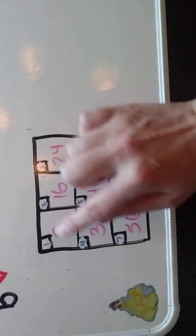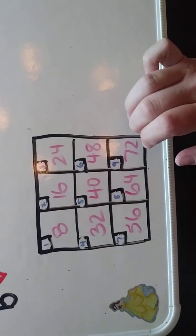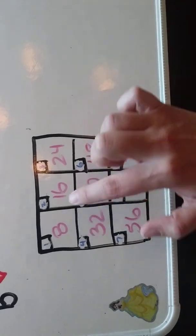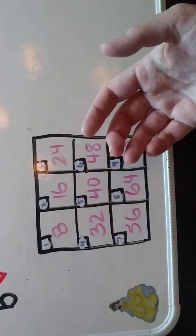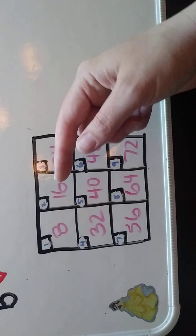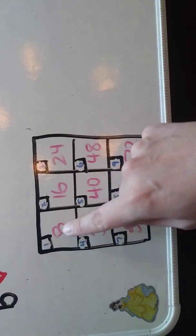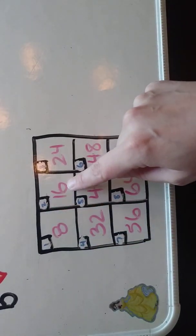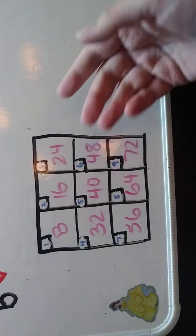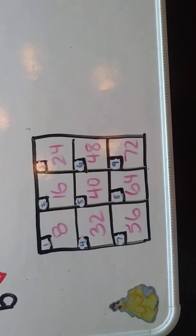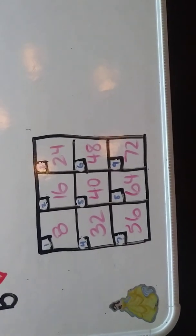So all you do is make a little table with nine spaces, and in each space you write the multiples of the number that you're going to divide by. So in this case it's 8. In the first square, 1 times 8 is 8, 2 times 8 is 16, 3 times 8 is 24, and so on. That will help us find the number that works the best when we're doing our division.